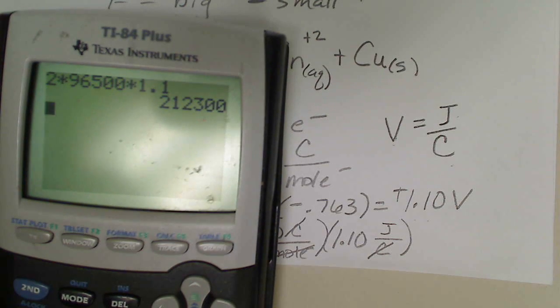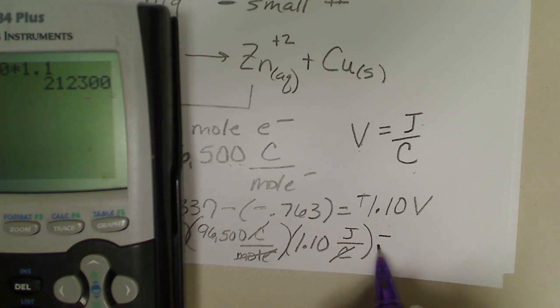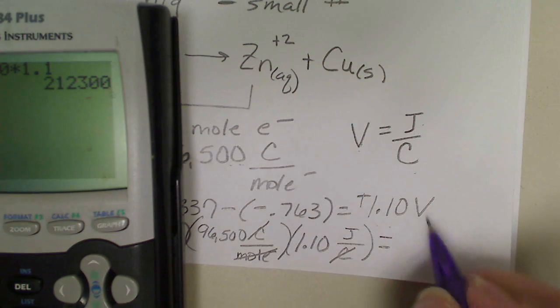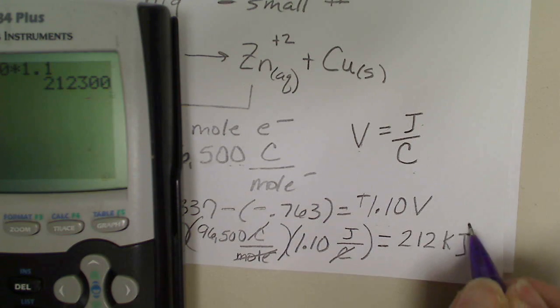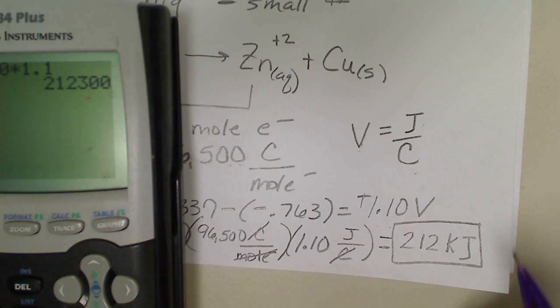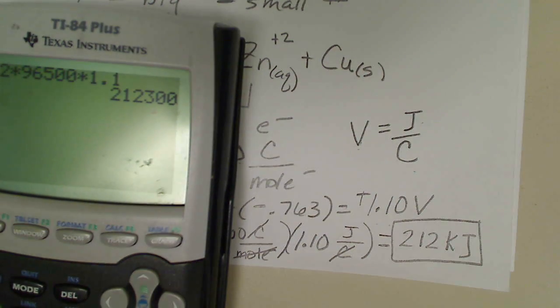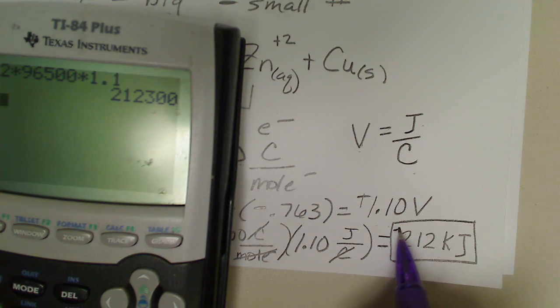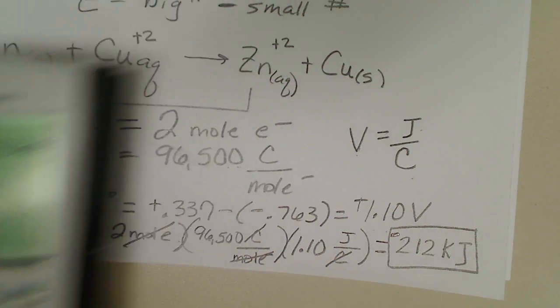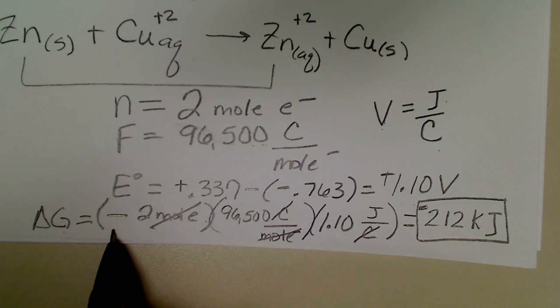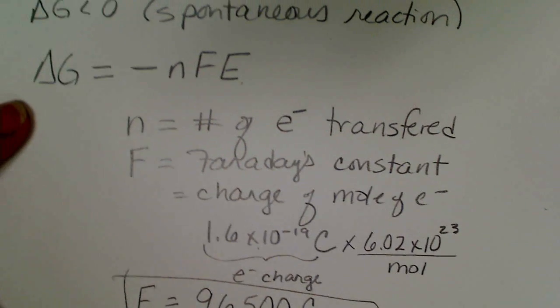Delta G when we do this calculation will always be in joules. If we do that, two times 96,500 times 1.1, we get a large number: 212,300 joules. I'm going to round that to 212 kilojoules, and I forgot the most important thing, the negative sign.